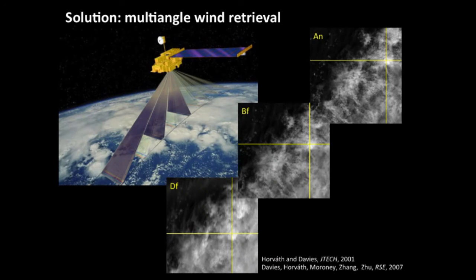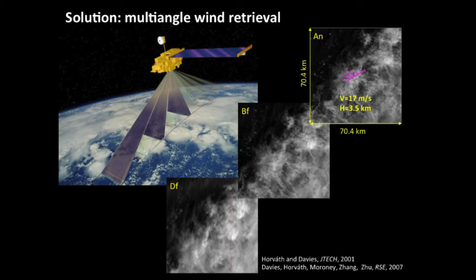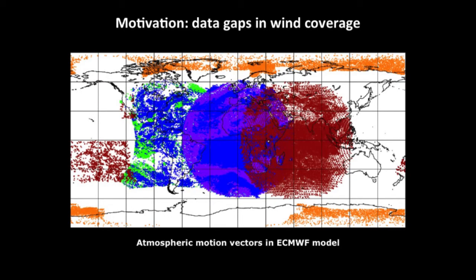As an example of how a wind retrieval works: you take the forward-looking 70-degree camera for a scene of 70 kilometers, and calculate one horizontal wind vector for that 70-kilometer region. Then you take the 46-degree camera view and then the nadir. Using pattern recognition software to identify the same cloud in the different images, and from the locations you pull out — in this case — a cloud height of about the right value and a wind speed of 17 meters per second.